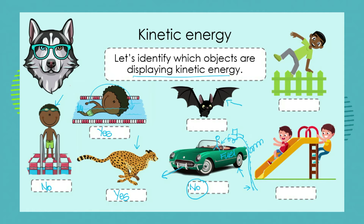What about the bat flying? We can see from the picture it is displaying kinetic energy because we can see that it's moving. What about this little boy? He is in the action of jumping over the fence — is he displaying kinetic energy? Yes, he is because he is moving. What about these two little boys playing on the slide? The one climbing up the ladder — yes, he has kinetic energy because he's moving. When he stands at the top of the slide, no, he has potential energy. When he slides down the slide, yes, he has kinetic energy.